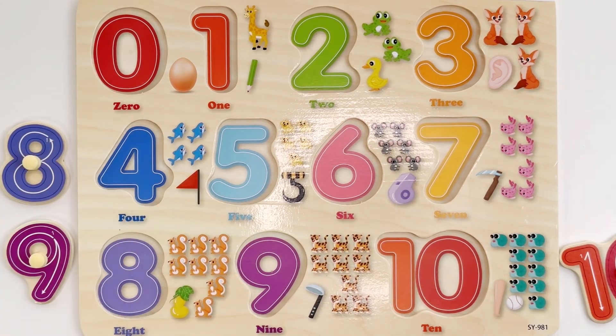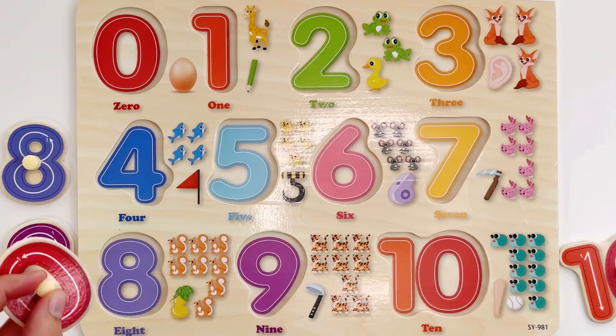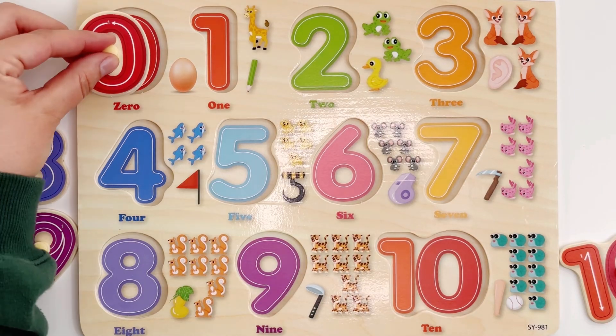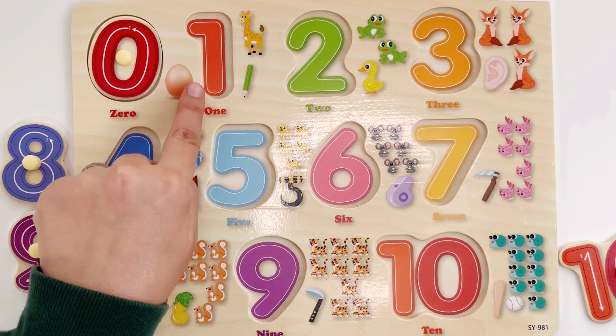Zero. Here we have zero and it's the color red. Zero goes over here. You guessed it. Zero is oval like an egg.